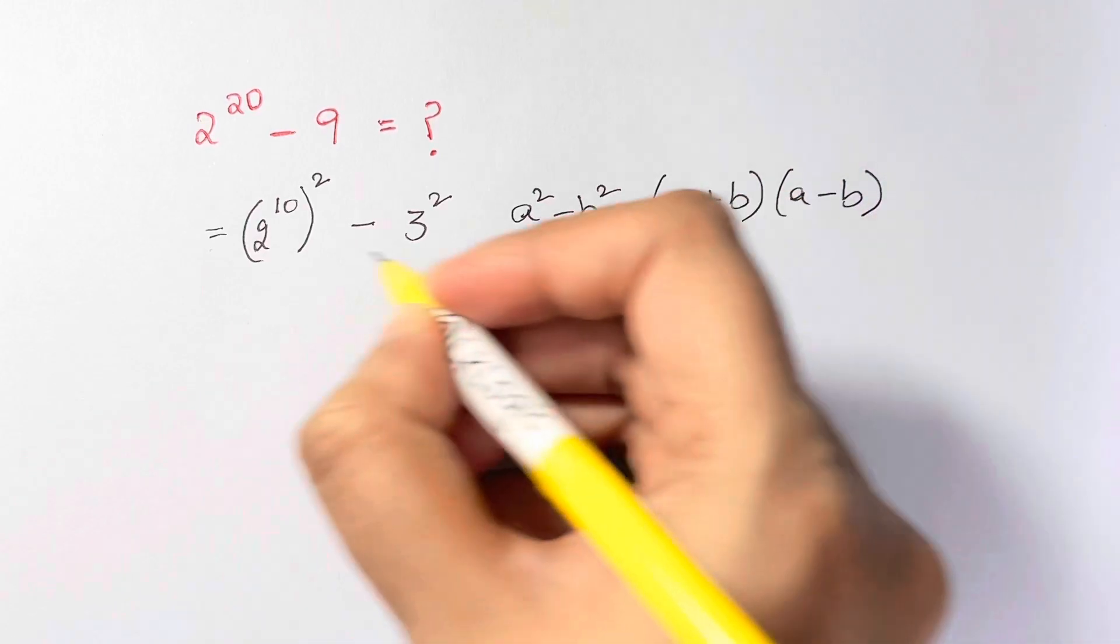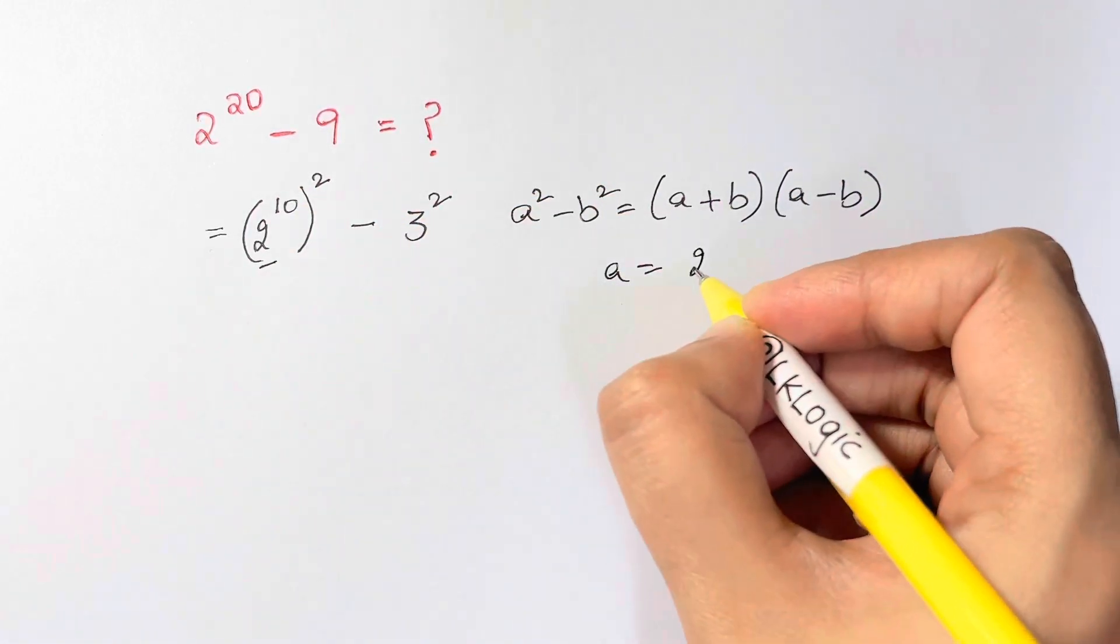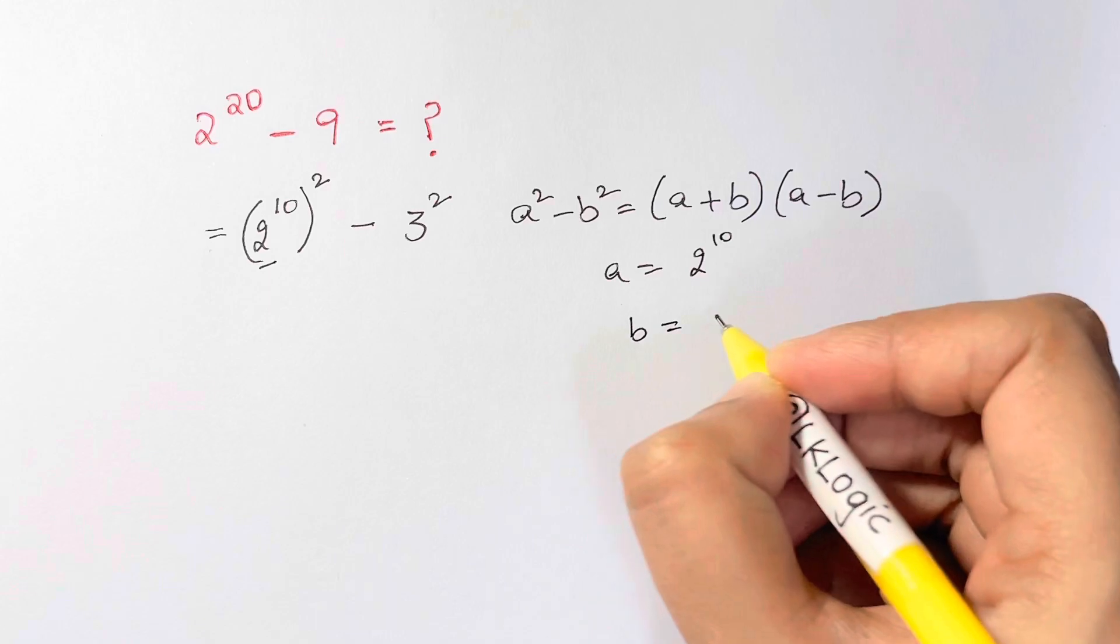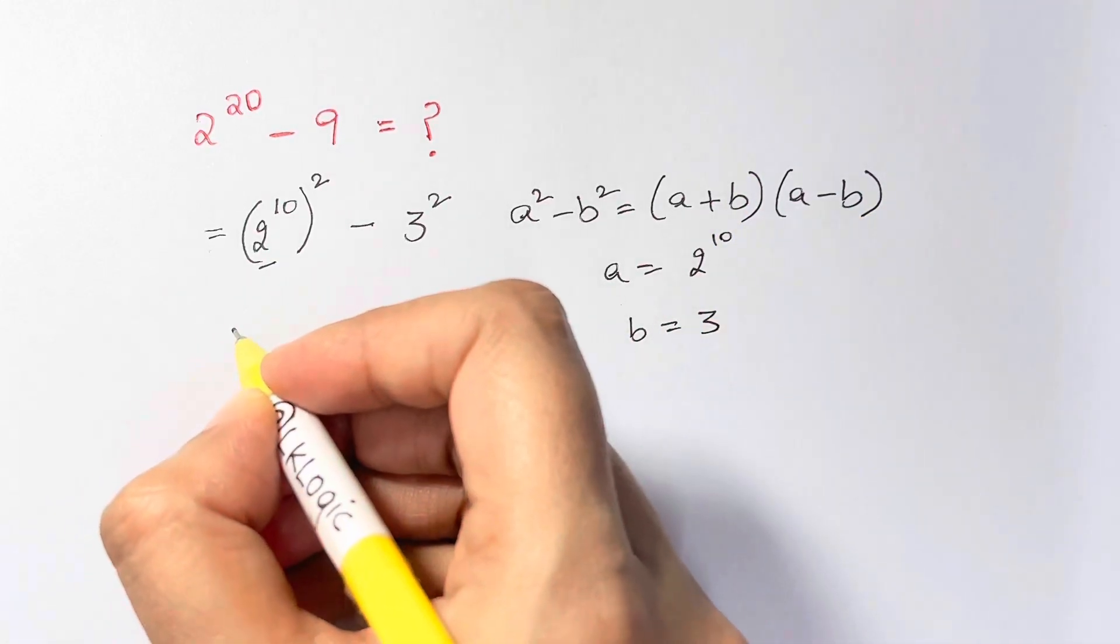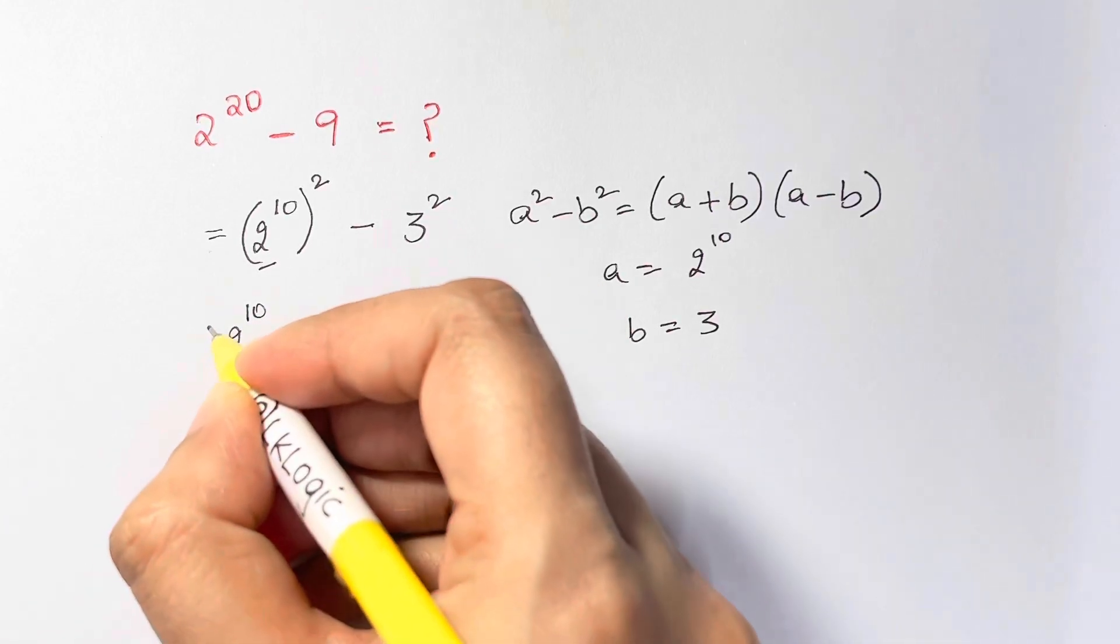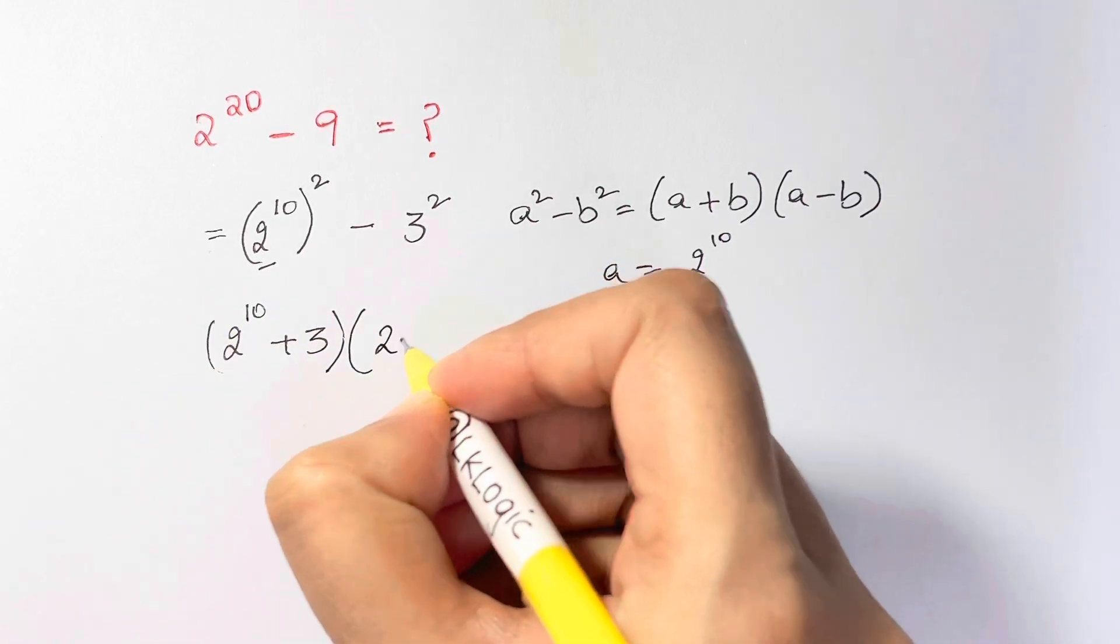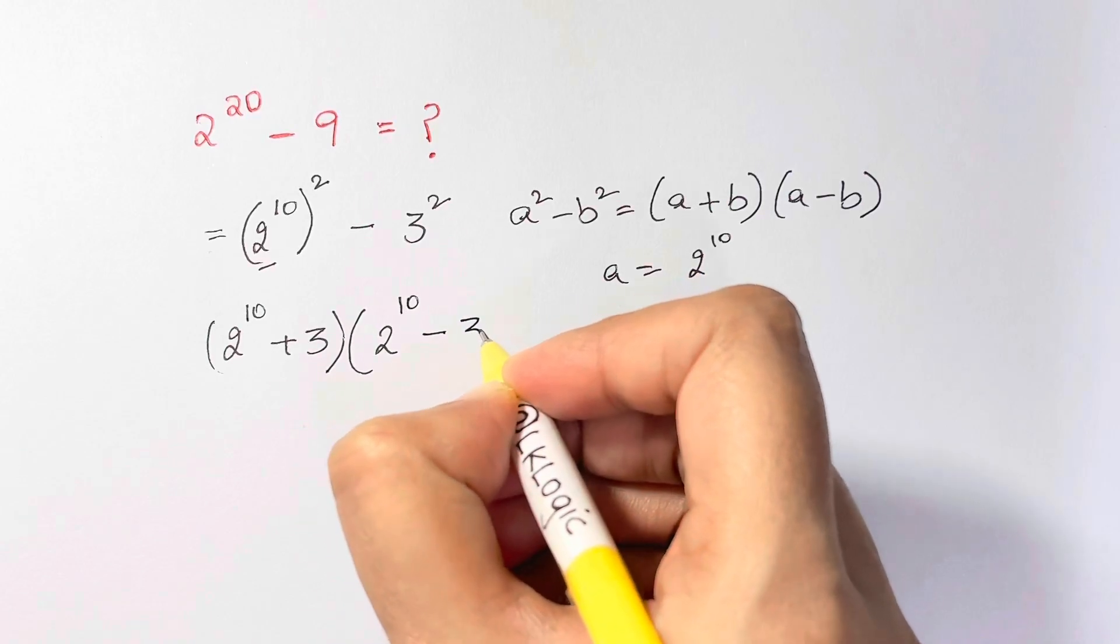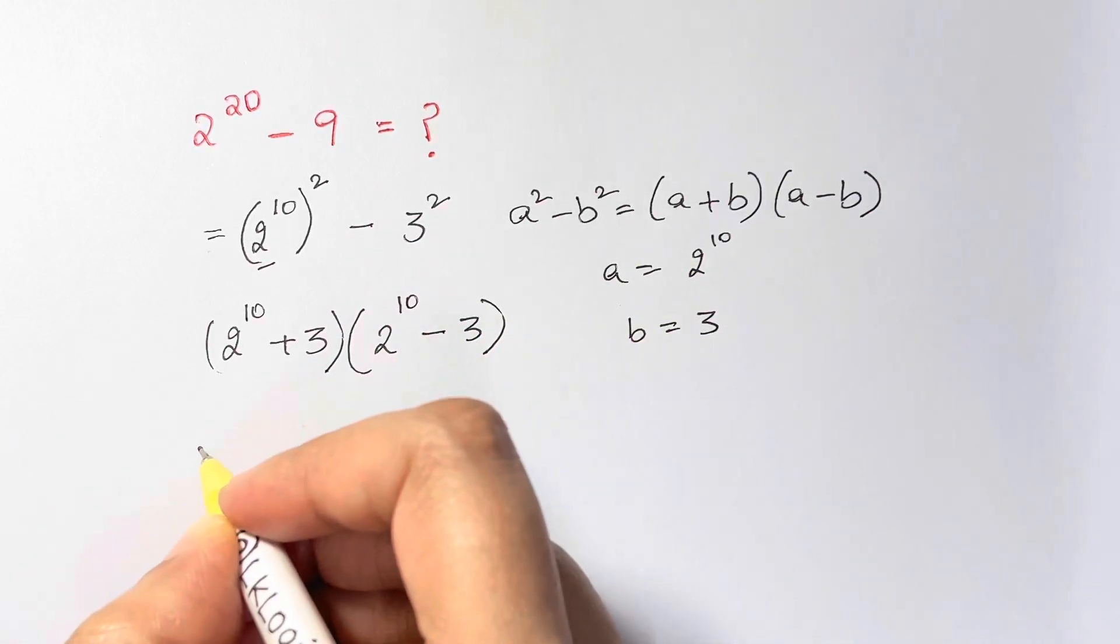So what is our a here? a is this part, 2 to the power of 10, and b is 3. So let's substitute. We have 2 raised to 10 plus 3 times 2 raised to 10 minus 3.